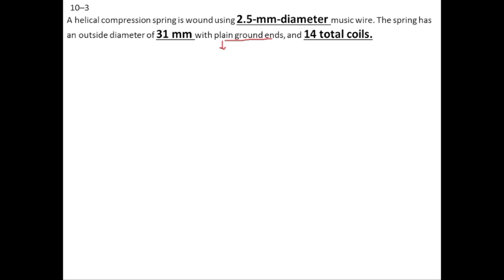The spring is plain and ground. Plain means the helix angle is maintained throughout the spring — sometimes we change the helix angle at the ends, but for a plain spring the helix angle at the ends equals the helix angle throughout the body. Ground means that some material is removed from the spring wire at the ends for the purpose of seating.